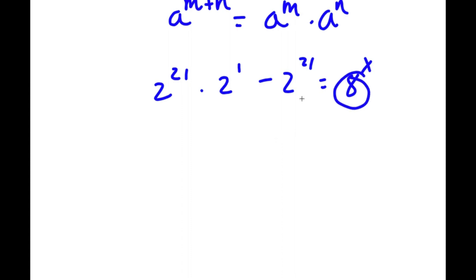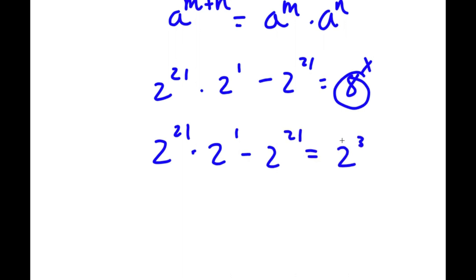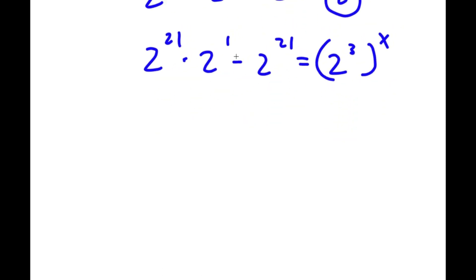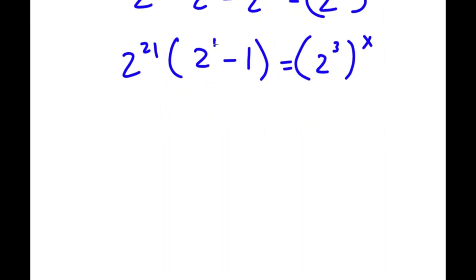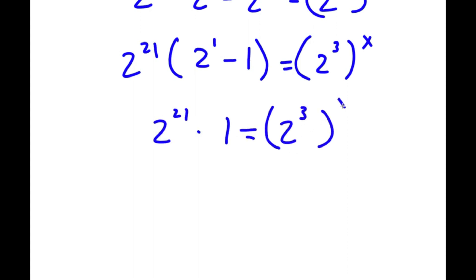Now, 8 is the same thing as 2 to the power of 3. So I have 2 to the power of 21 times 2 to the power of 1 minus 2 to the power of 21 is equal to 2 to the power of 3 to the power of x. From the left-hand side, if I factor out 2 to the power of 21, I get 2 to the power of 21 times (2 to the power of 1 minus 1) still equal to 2 to the power of 3 to the power of x. Now, 2 to the power of 1 is 2, and 2 minus 1 is 1, so I'm left with 2 to the power of 21 times 1 equal to 2 to the power of 3 to the power of x.